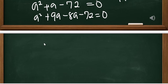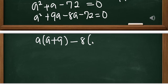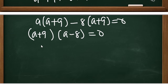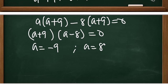Solving this quadratically by finding two factors of 72: we have 9 and 8, where 9 is positive and 8 is negative, since 9 minus 8 equals positive 1 and 9 times negative 8 equals negative 72. So: A squared plus 9A minus 8A minus 72 equals 0. Factoring out A gives A plus 9, and factoring out negative 8 gives A plus 9. So A plus 9 times A minus 8 equals 0, giving A equals negative 9 or A equals positive 8.